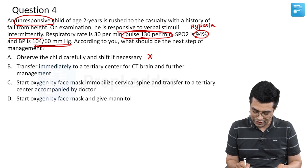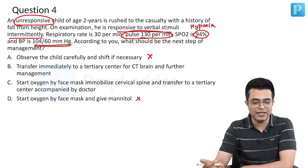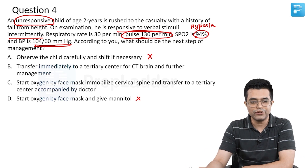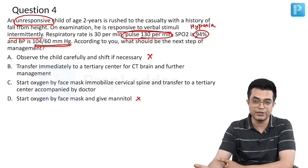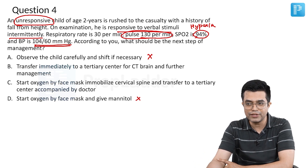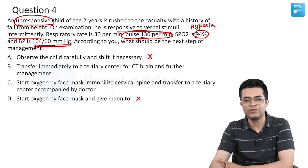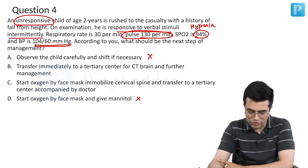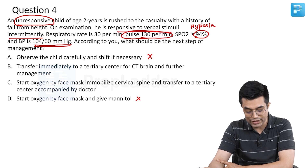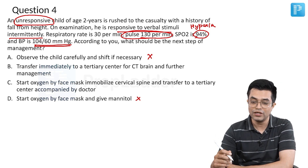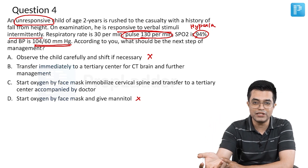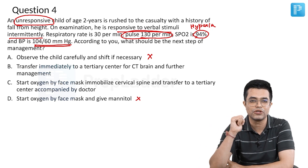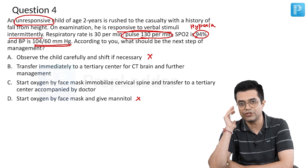Starting oxygen by face mask and giving mannitol is not correct. Why would you give mannitol? There is no evidence of raised intracranial pressure — no unequal pupils, no cranial nerve palsy, no Cushing's reflex signs, no irregular respiration, no bradycardia. In fact, there is tachycardia. Mannitol can cause hypotension and may worsen bleeding. Unless there is objective evidence or strong clinical suspicion of raised ICP, you do not give mannitol.